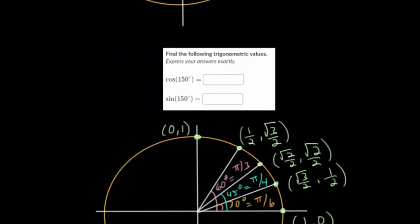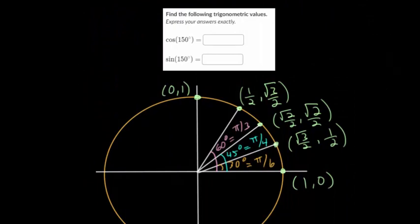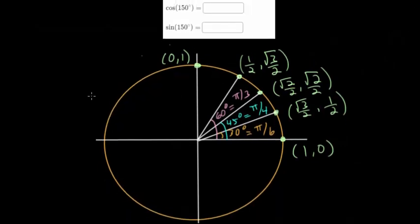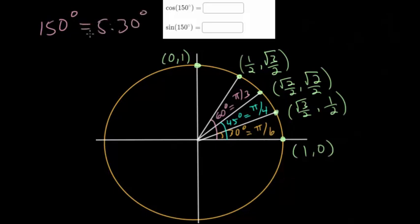We can start with the first problem, where we need to find the cosine of 150° and the sine of 150°. Looking at the unit circle with the special values, you can notice that 150 degrees is a multiple of 30 degrees — namely, it's five times bigger. So this angle is going to have something to do with the 30-degree angle.